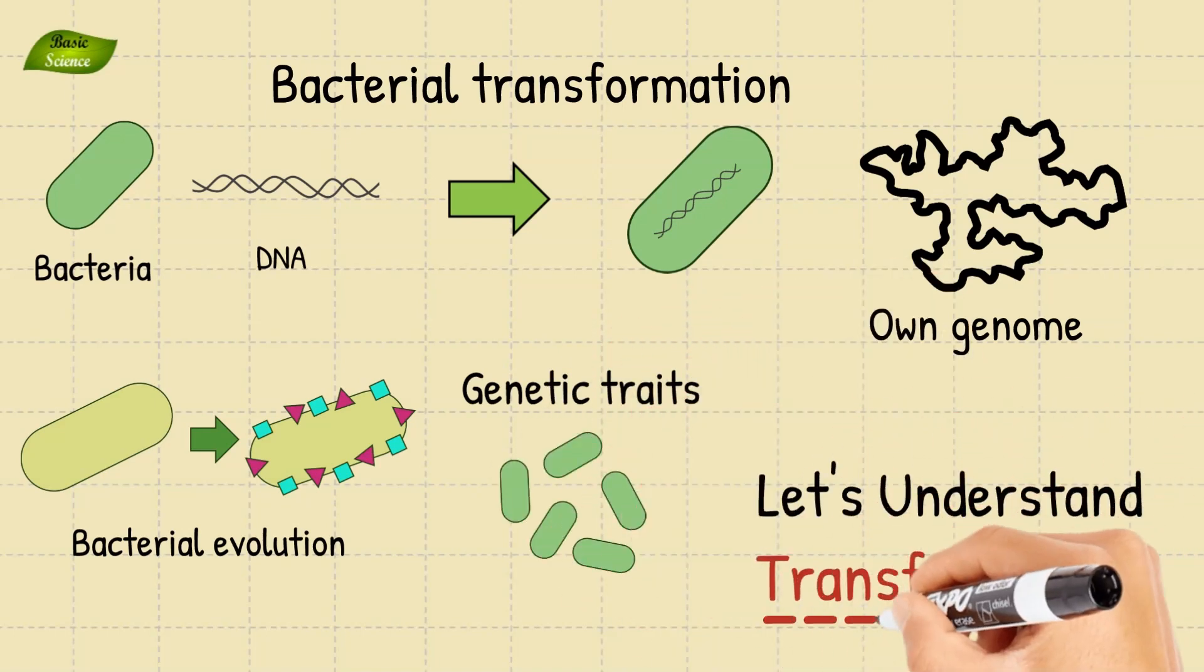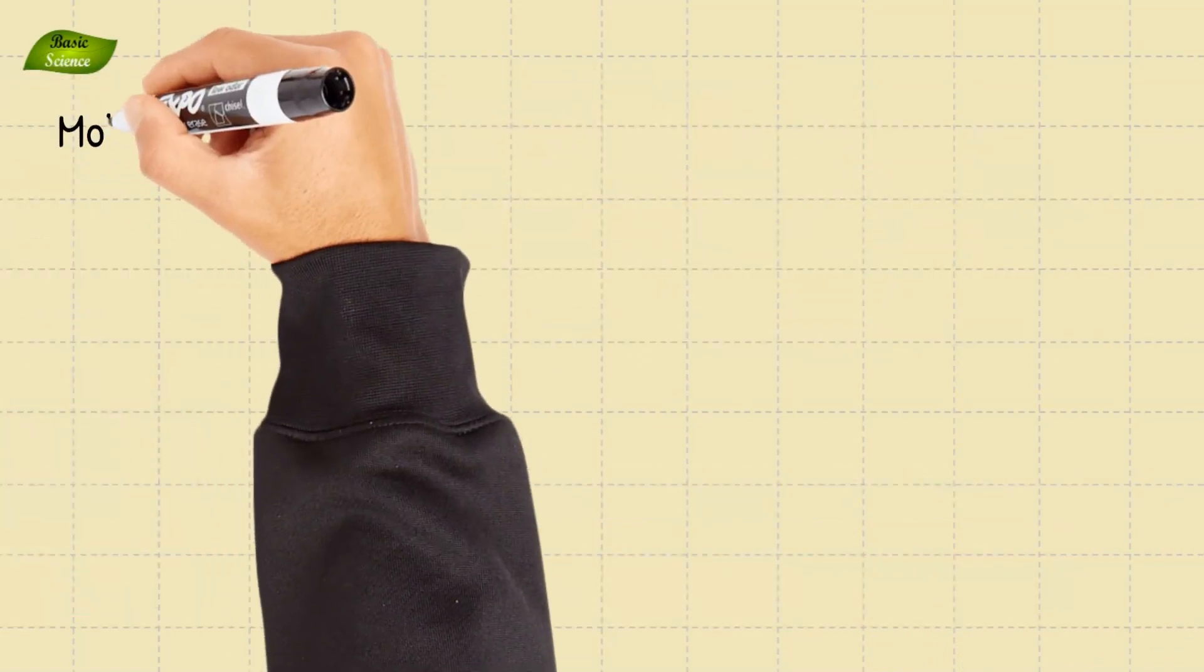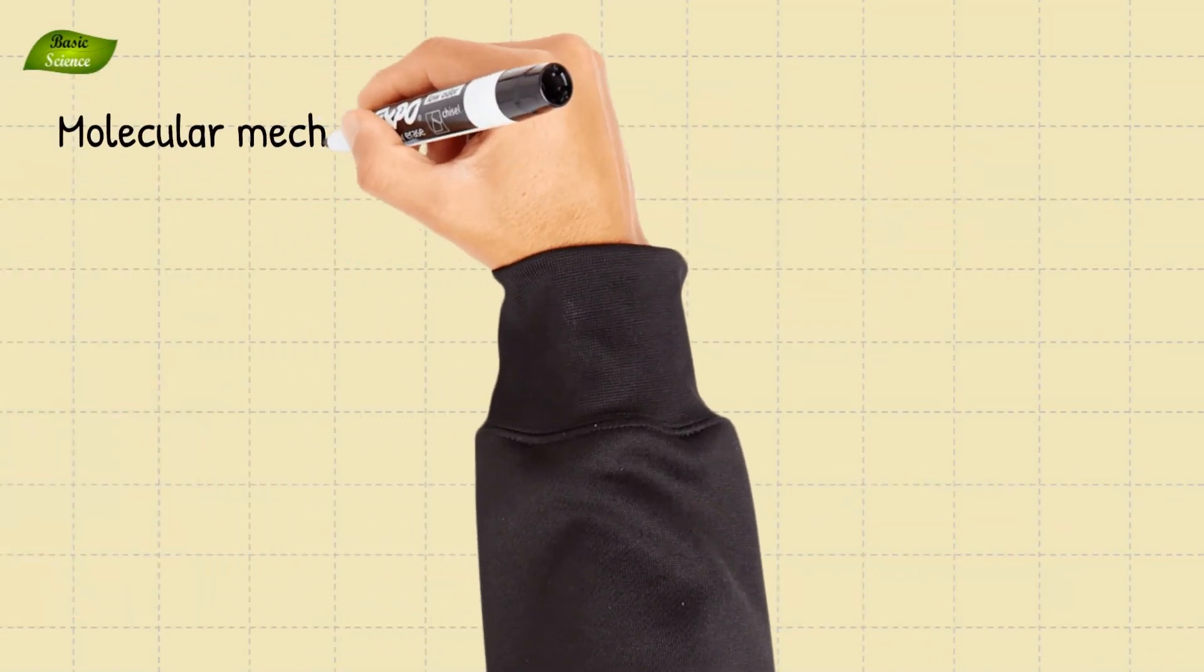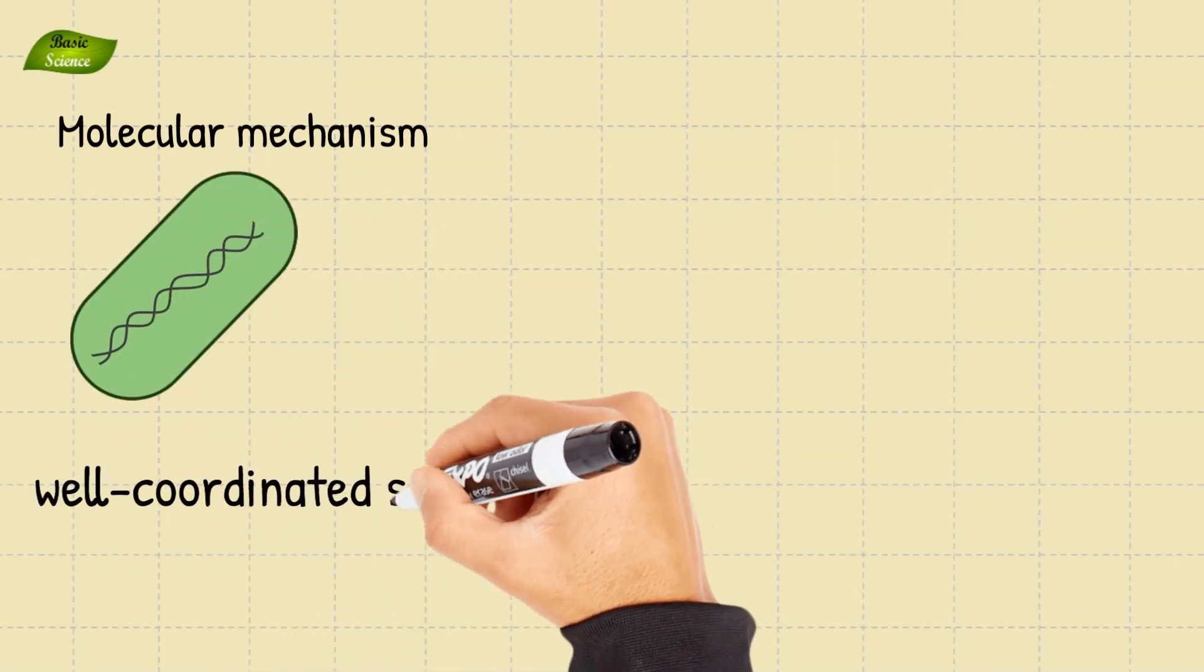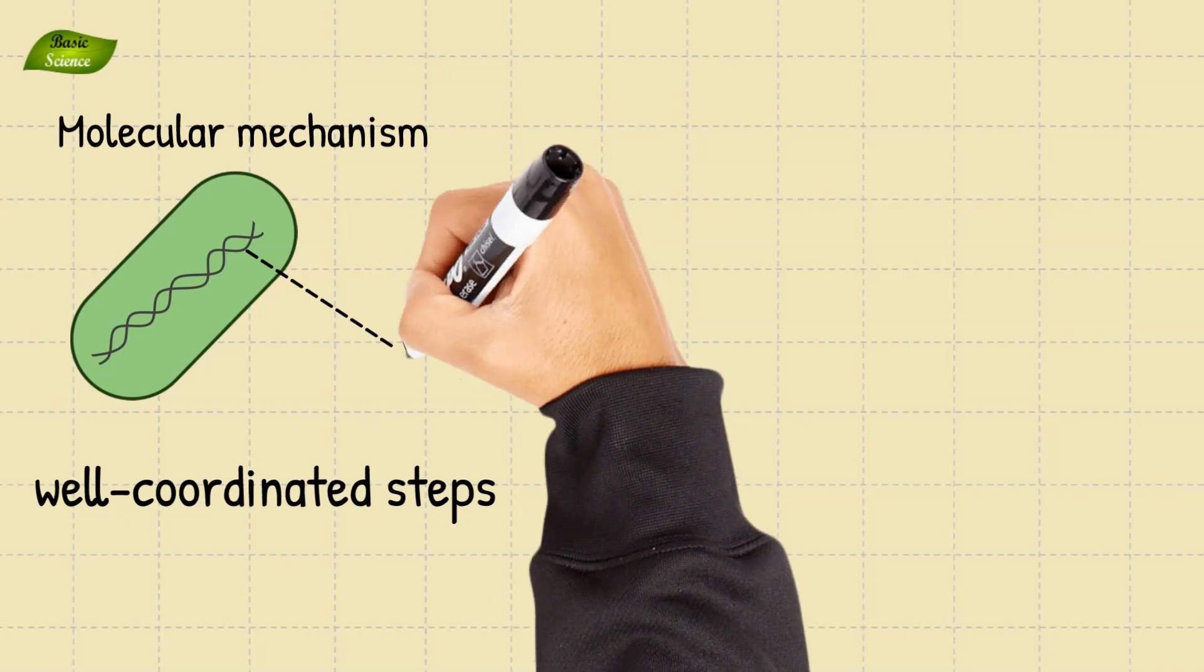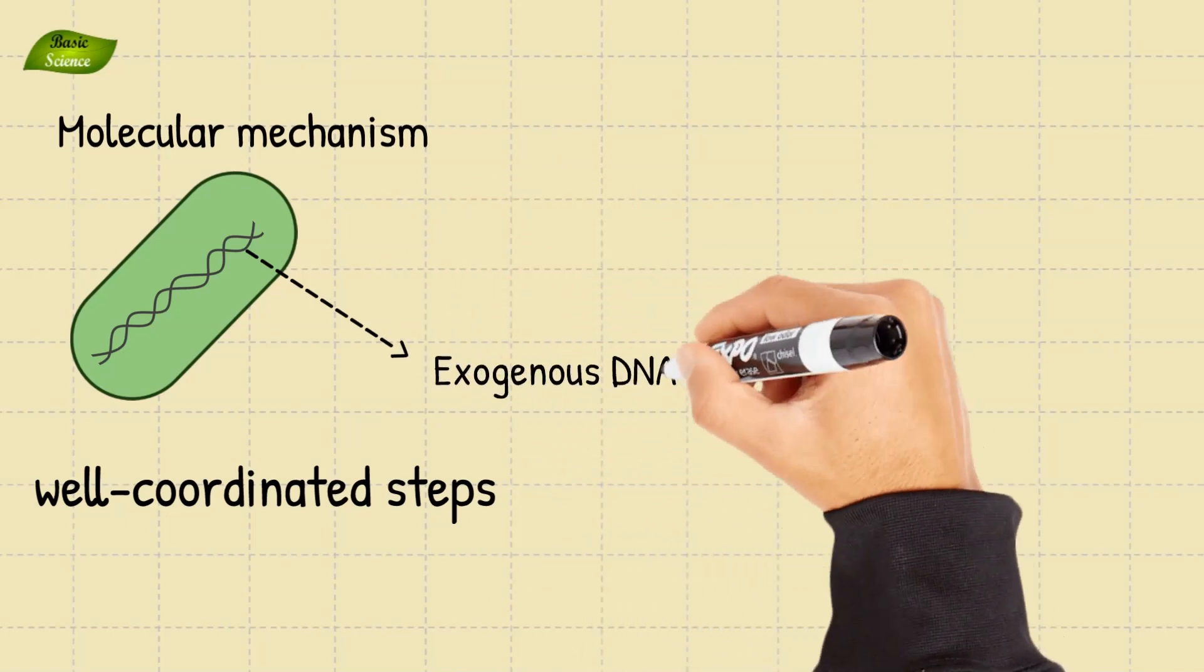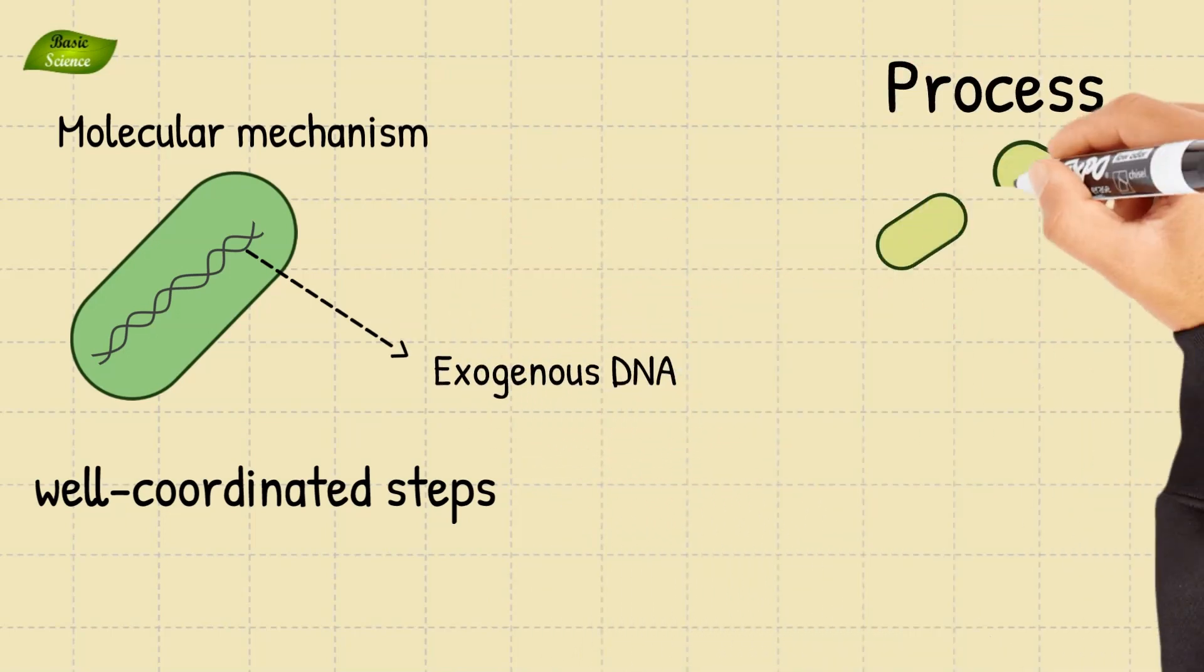Now let's understand the transformation in more detail. The molecular mechanism of bacterial transformation involves a series of well-coordinated steps that enable the uptake of exogenous DNA. The process is best understood in naturally competent bacteria.